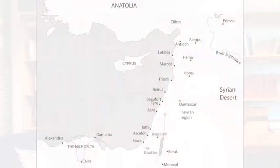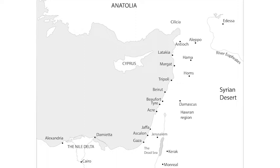The main areas of agricultural land across the Near East are firstly, and probably most importantly, the Nile Delta. The Nile Delta in Egypt naturally gets inundated with the waters of the Nile on an annual basis, and that brings with it natural minerals and fertilizers that keep the soil very suitable for agriculture. So it's not surprising that Egypt historically has a reputation for supplying much of the region's cereal crops and in particular grain.